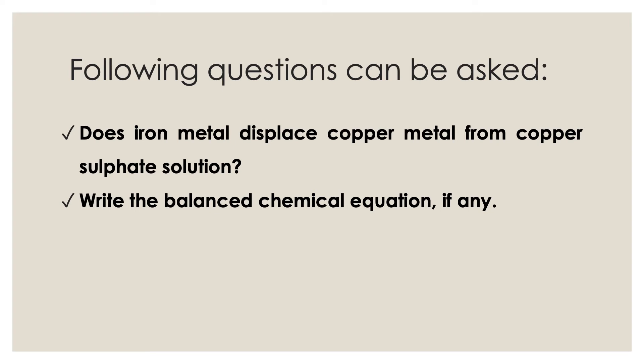Now the player of the other Team B has to answer two questions, which you can see on the screen. Question A: Does iron metal displace copper metal from copper sulphate solution? And if yes, write the balanced chemical equation. If Team B answers both questions correctly, they are awarded two points. If they answer only one question, they get one point. If they are not able to answer, the chance is given to Team A, and Team A gets bonus points. The game continues, and the team that collects maximum points wins.